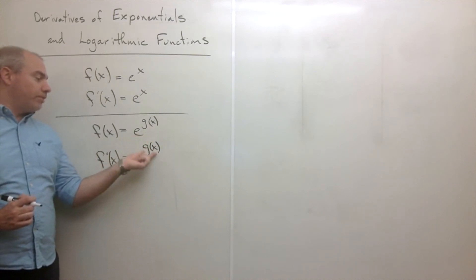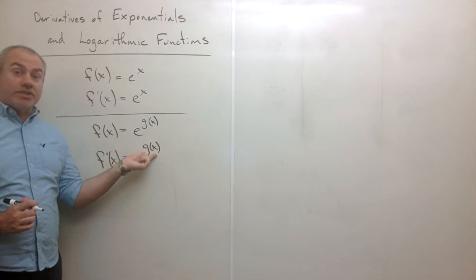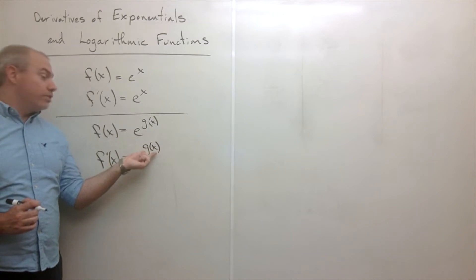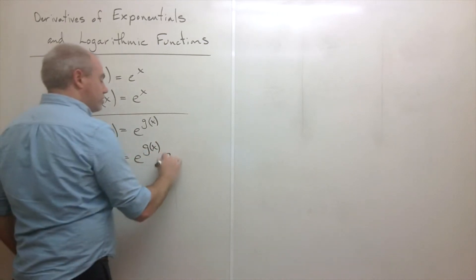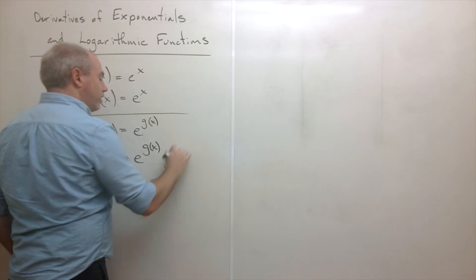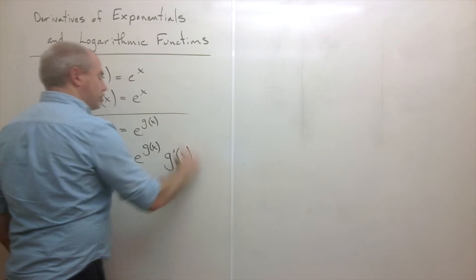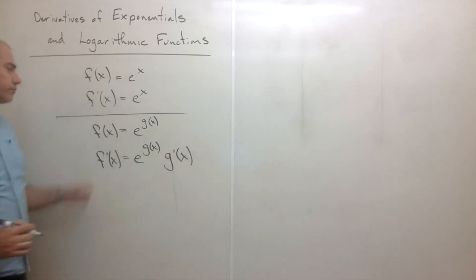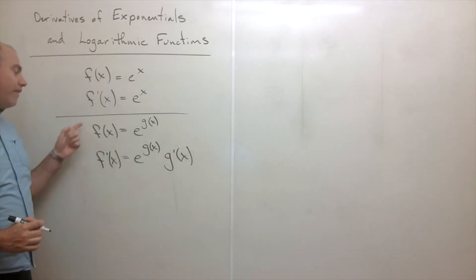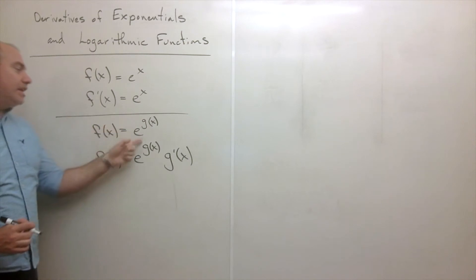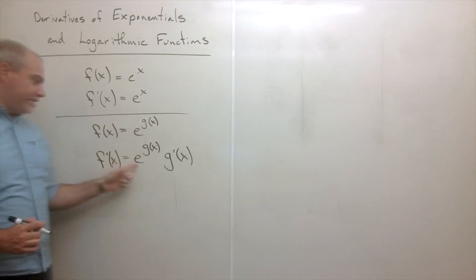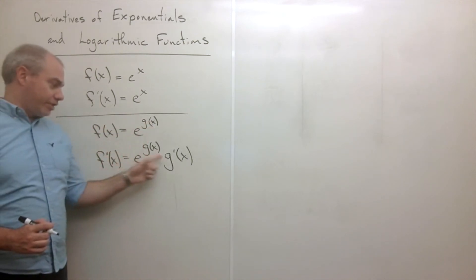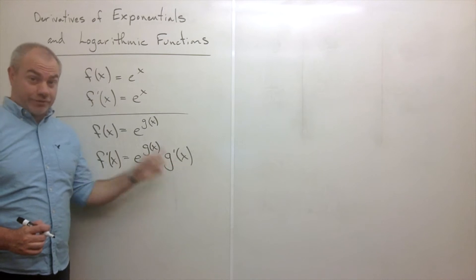But then I have to multiply by the derivative of the inside function by the chain rule, which gives g prime of x. So if I have e to some function, the derivative is e to that function times the derivative of that function.